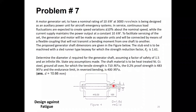We need to determine diameter D for the generator shaft, assuming a factor of safety of 1.5 and infinite life is required. The shaft material is heat-treated nickel-chromium steel, ground all over. The ultimate tensile strength is 710 MPa, the 0.2% proof strength (yield strength) is 483 MPa, and the endurance limit in reverse bending is 400 MPa.